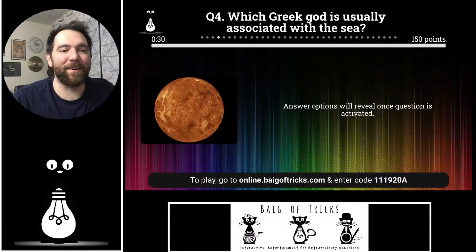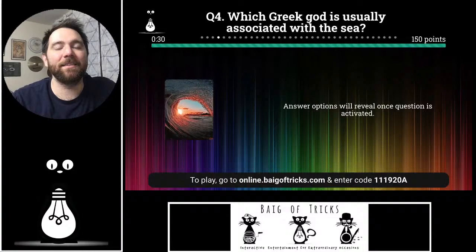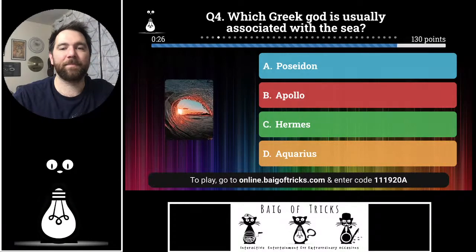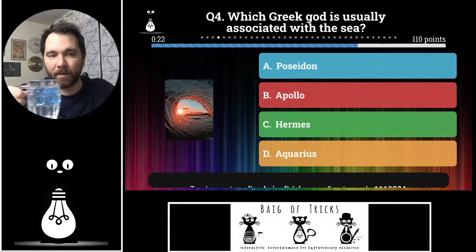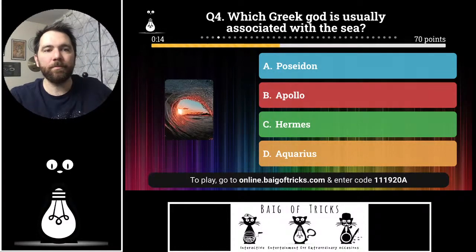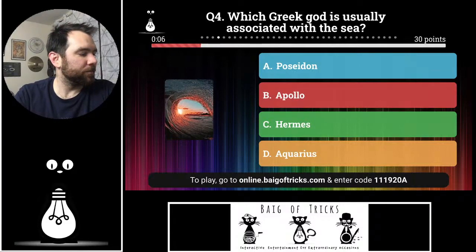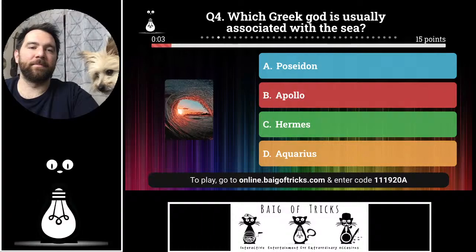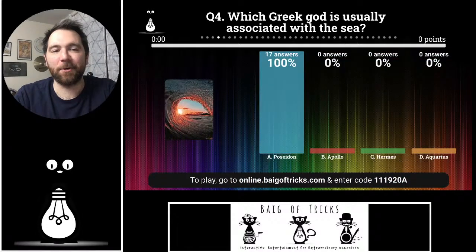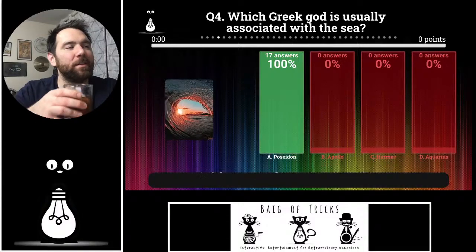Question number four: which Greek god is usually associated with the sea? Is it Poseidon, Apollo, Hermes, or Aquarius? Every single person got this — that is a social! Great job everybody. The correct answer is Poseidon — Neptune in Roman mythology, Kelly Slater in real life.